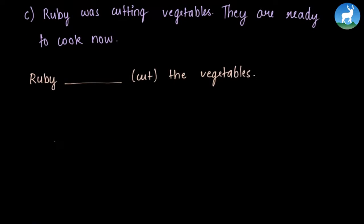The next question is, Ruby was cutting vegetables. They are ready to cook now. Now this means that Ruby was cutting vegetables and the action of cutting vegetables is now over as the vegetables are already cut. So Ruby cut the vegetables. The past form for cut is cut. So in this case, the verb given in the bracket is the appropriate one.